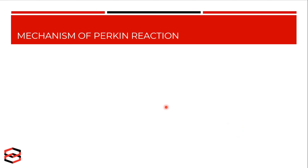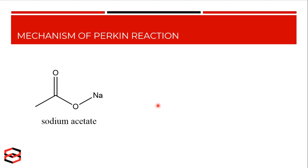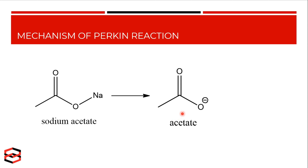Let us see the mechanism for this Perkin reaction. The alkali salt of the acid breaks down to form an acetate ion, which is the acid ion, and a sodium ion.